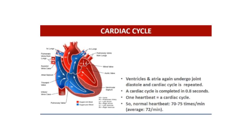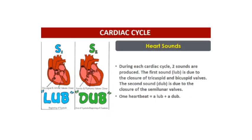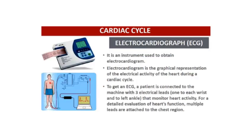A cardiac cycle is completed in about 0.8 seconds, so one heartbeat is one cardiac cycle. Normal heart beats about 70 to 75 times per minute. If we listen carefully, there are two sounds the doctor can hear using a stethoscope: the first sound is 'lub,' which is due to the closure of the tricuspid and bicuspid valves, and the second is 'dub,' which is due to the closure of the semilunar valves. So one heartbeat is one lub and one dub.